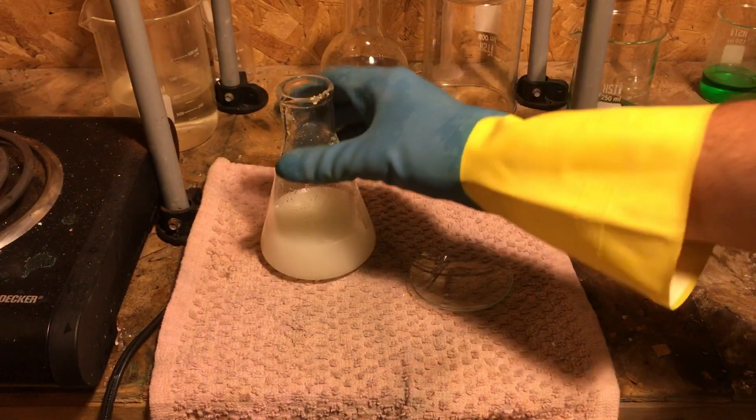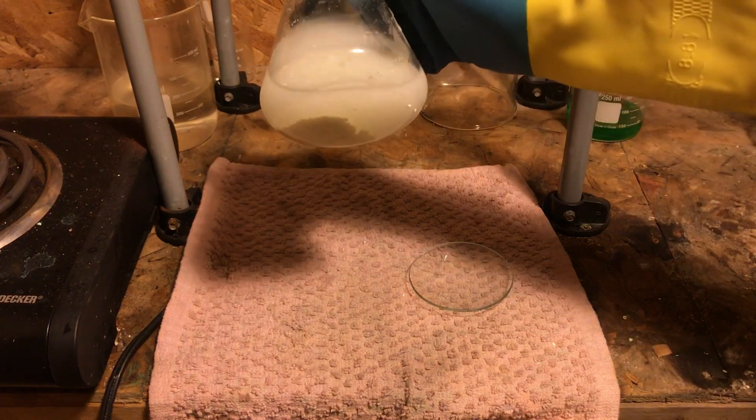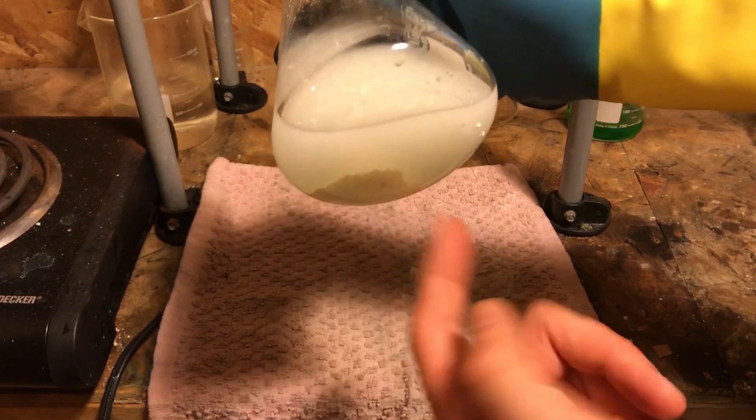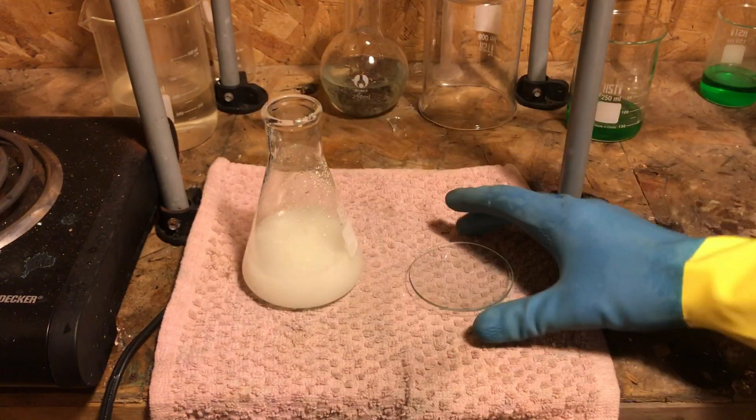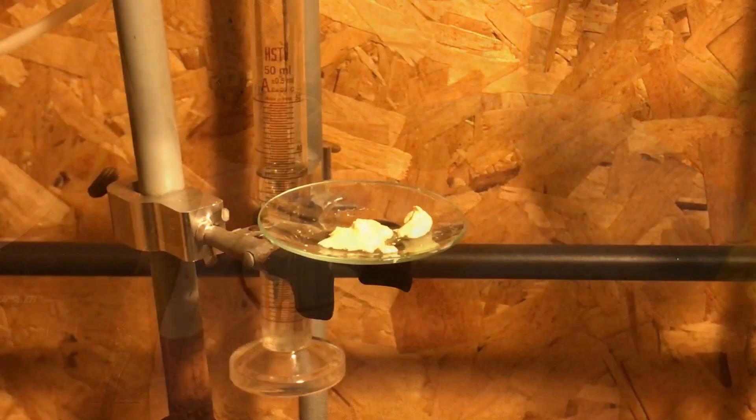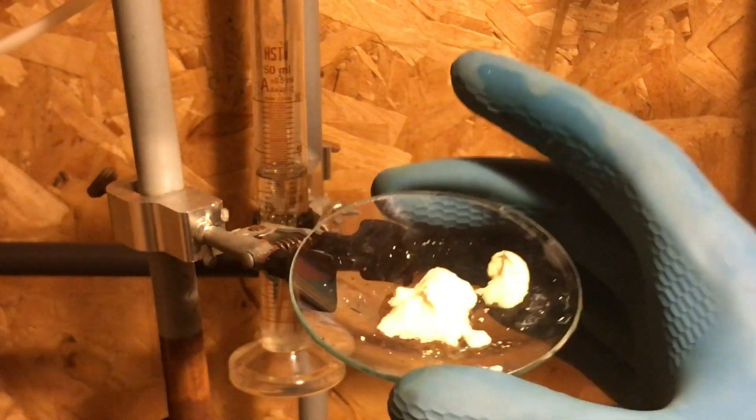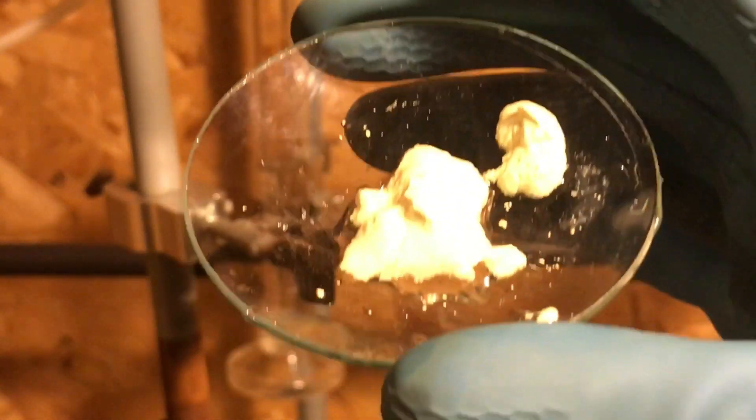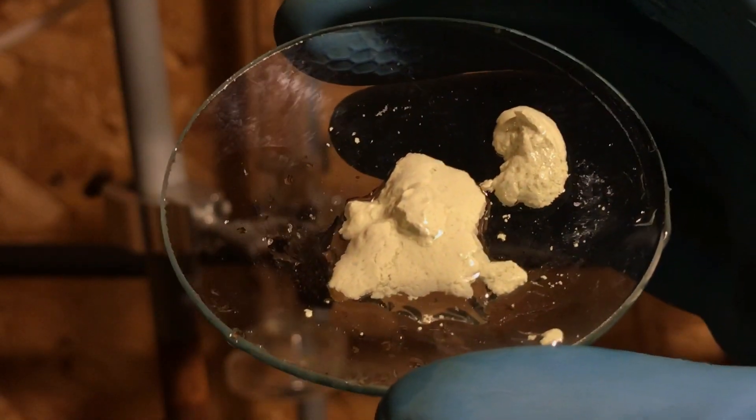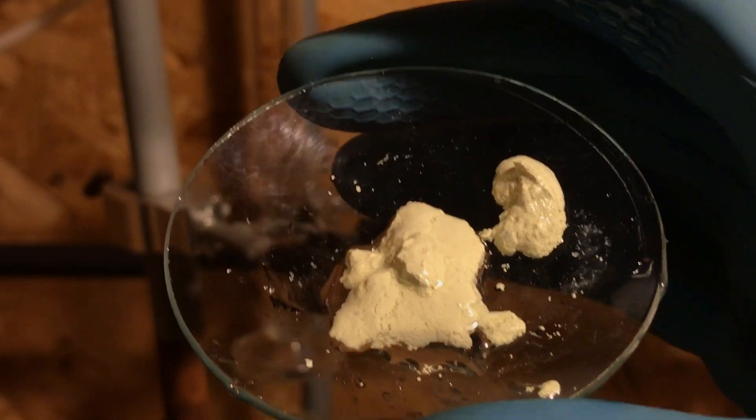I'm going to filter out the solution. I'm going to collect the silver bromide and place it in this evaporation disk. What you see here is the precipitate of the silver bromide that came out of the solution.